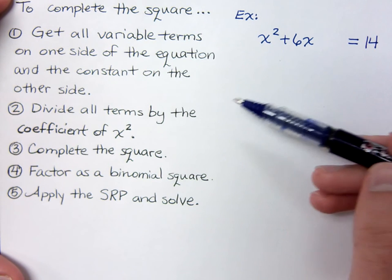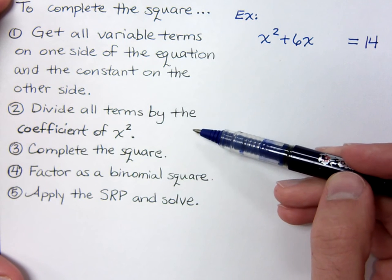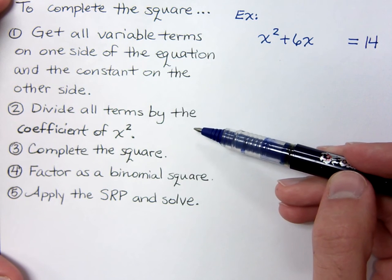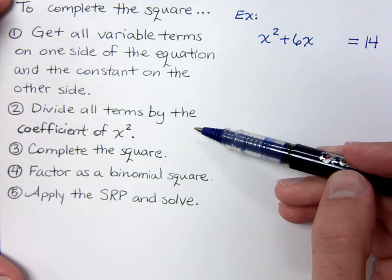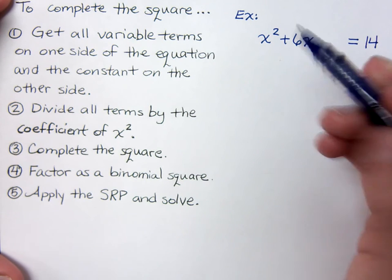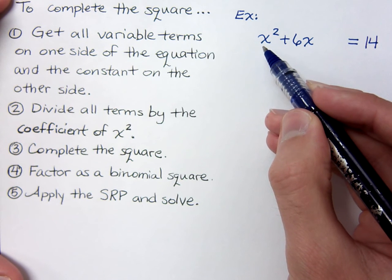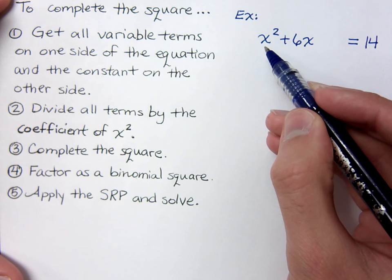The second step is to divide all terms by the coefficient of x squared. This will make sure that your x squared coefficient is a positive one, which will allow us to easily figure out what we need to add to complete the square. Now, the coefficient of x squared in this case is a positive one, so dividing everything by positive one isn't going to change anything.